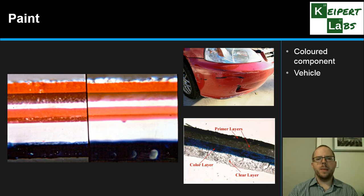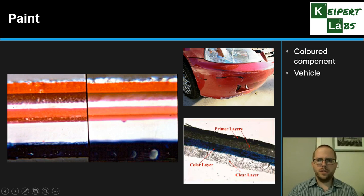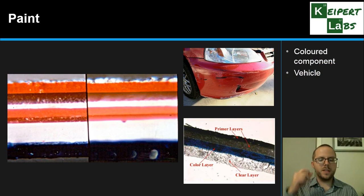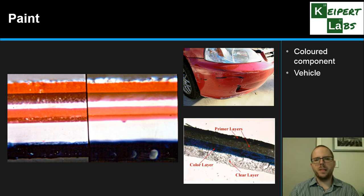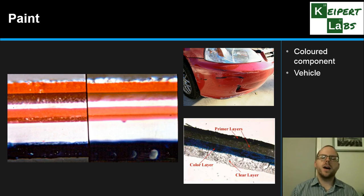So there are two main components or aspects to paint. Firstly, there's the bit that makes it colored, which might be a dye or a pigment depending on the type of paint — whether it's auto paint for a car, paint on a tool, house paint, or anything else. And then we also have the remaining complex mixture that goes into the paint, which helps carry that colored component. It has heaps of different bits and pieces that make the paint stick to surfaces, make it stick together, make it moisture resistant, inhibit mold growth, or prevent rust formation if it's for a car.